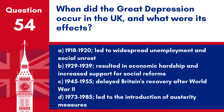Question 54. When did the Great Depression occur in the UK and what were its effects? a. 1918–1920 – led to widespread unemployment and social unrest. b. 1929–1939 – resulted in economic hardship and increased support for social reforms. c. 1945–1955 – delayed Britain's recovery after World War II. d. 1973–1985 – led to the introduction of austerity measures. Answer: b. The Great Depression in the UK, as part of the global economic downturn, resulted in significant economic hardship, high unemployment, and contributed to the push for social welfare reforms.